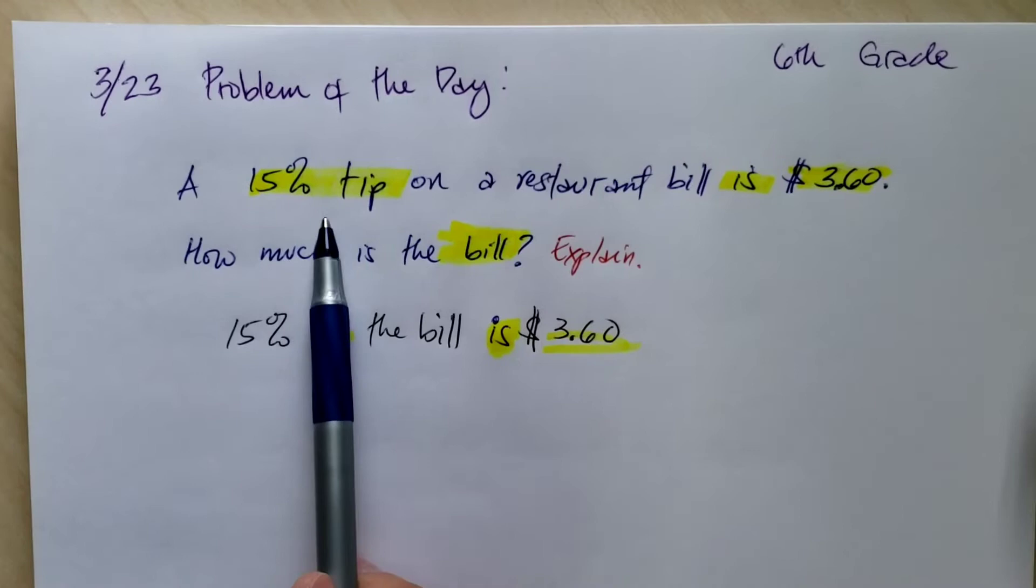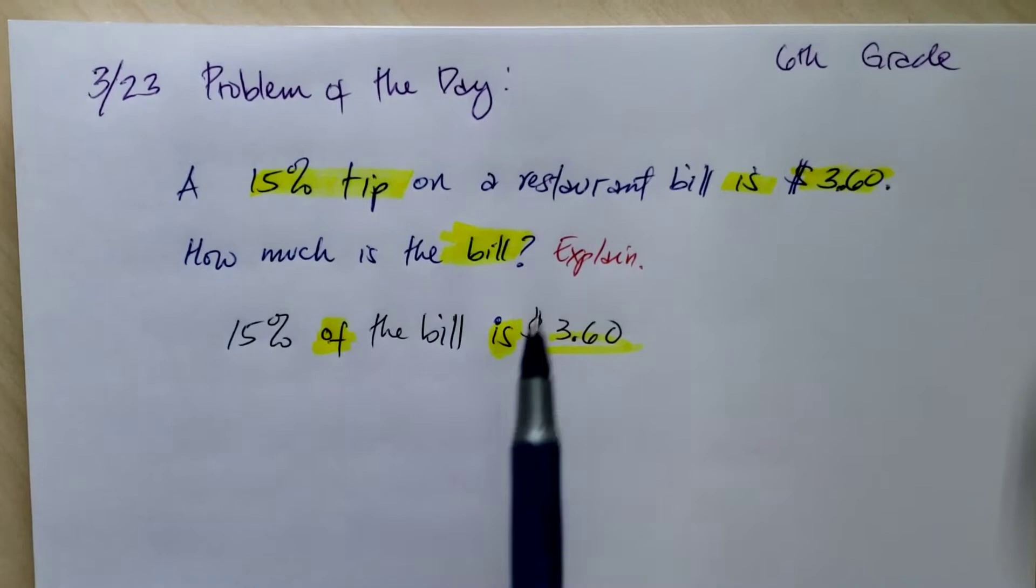Hello, students. So the problem of the day states that a 15% tip on a restaurant bill is $3.60. How much is the bill?